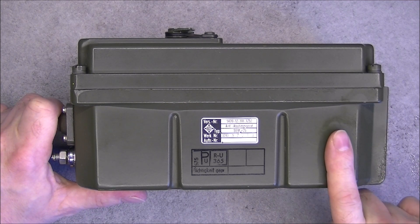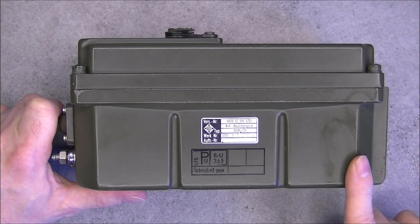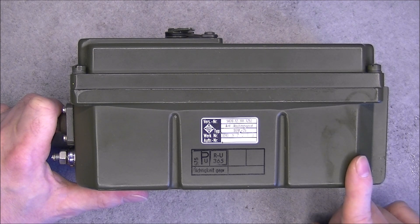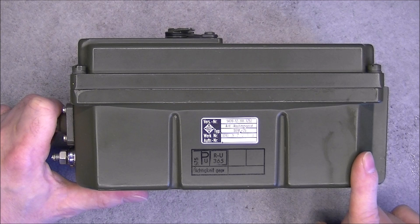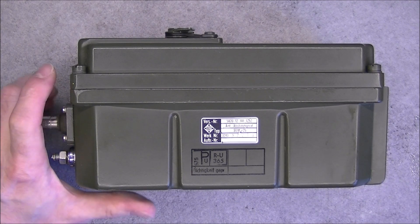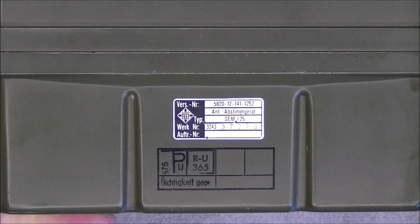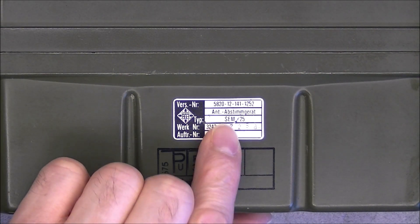These boxes were made in enormous quantities thanks to the German taxpayers and they are still available on eBay for little money, something between 20 and 50 euros usually. If you want one you'll be able to find one quite easily just by searching for SEM25 antenna tuner.